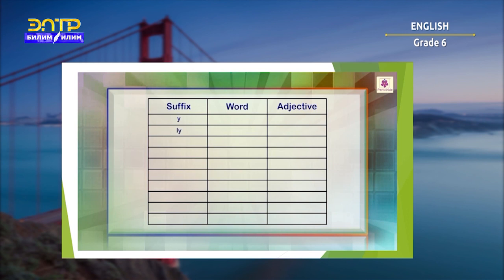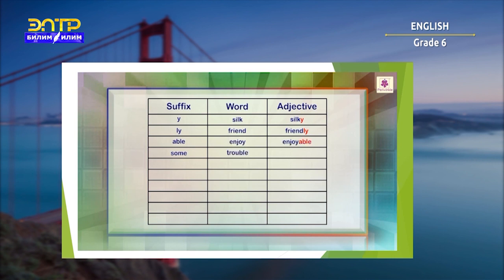Some adjectives end with suffix -Y or -LY. For example: silk → silky, friend → friendly. Some adjectives end with suffix -ABLE or -SOME. For example: enjoy → enjoyable, trouble → troublesome.